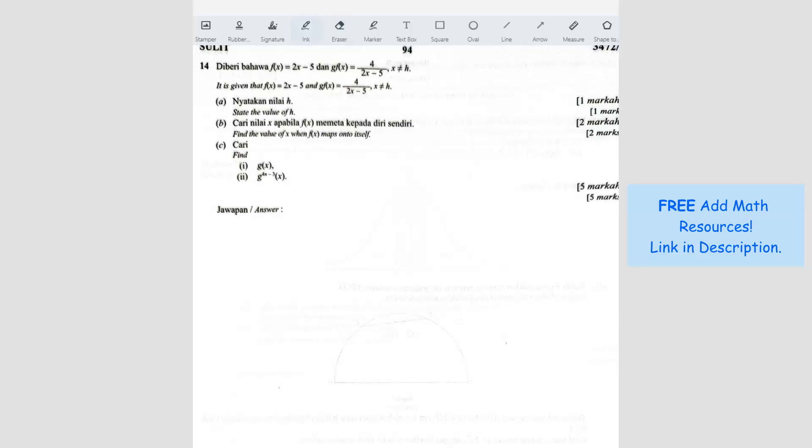Question number 14. It is given that f(x) equals to this and then g(f(x)) equals to this and x not equals to h.